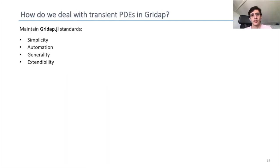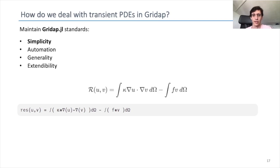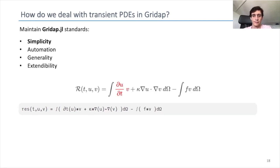How do we do that in Gridapp? We want to maintain the Gridapp standards. One of the key points in Gridapp is simplicity, where we are able to reproduce in a very simple way the weak form of the problem. This is how you would write the residual of the weak form in the steady case, and as you can see it's very similar to what you would write on paper. We want to keep that for the transient problem, and we can do that through the use of the partial_t operator that represents the time derivative of the unknown u, so we keep this simplicity of writing weak forms into the scripts.